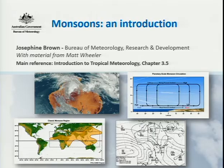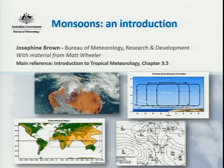Good morning. My name is Jo Brown and I'm a research scientist at the Bureau of Meteorology. The primary focus of my research at the moment is on the Australian monsoon and looking at how the Australian monsoon is predicted to change in a warmer world. I also collaborate with a lot of other scientists on climate change and climate variability work.